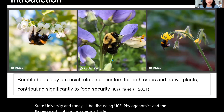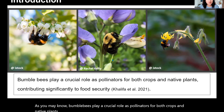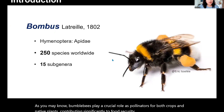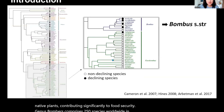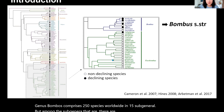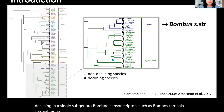As you may know, bumblebees play a crucial role as pollinators for both crops and native plants, contributing significantly to food security. Genus Bombus comprises 250 species worldwide in 15 subgenera. But among the subgenera, there are many species that are currently declining in a single subgenus, Bombus sensus stricto, such as Bombus terricola, occidentalis, franklinii, and affinis.